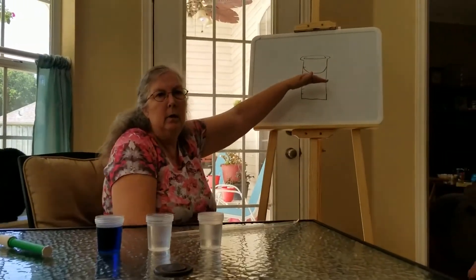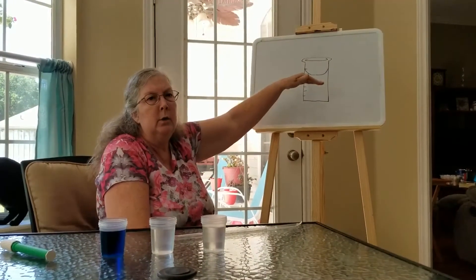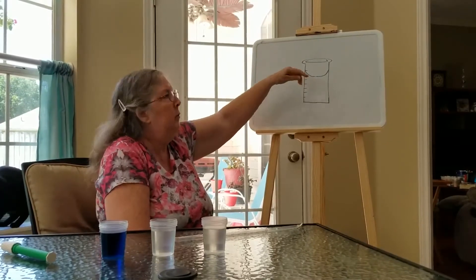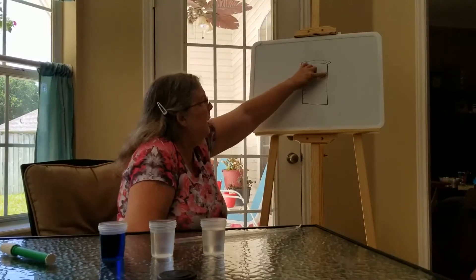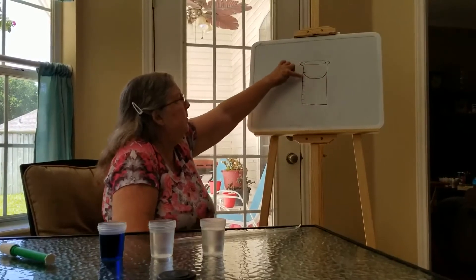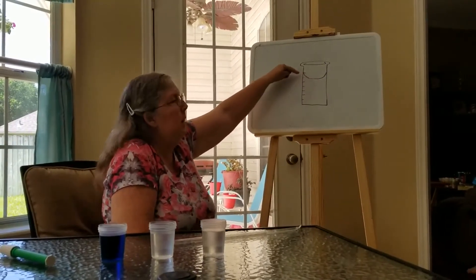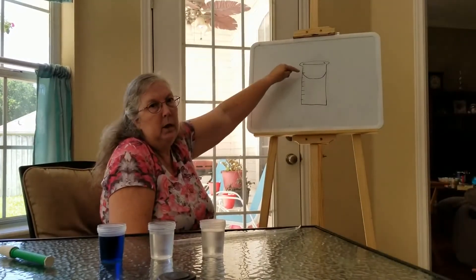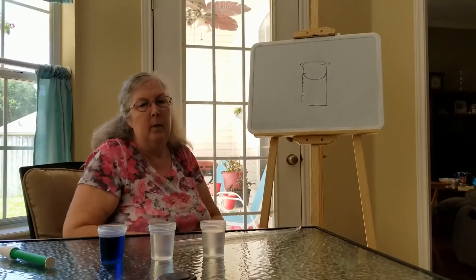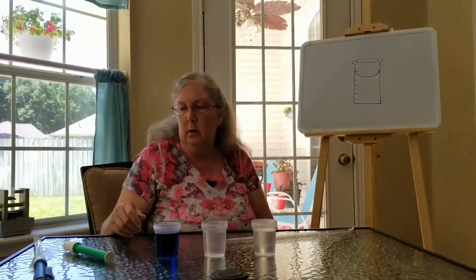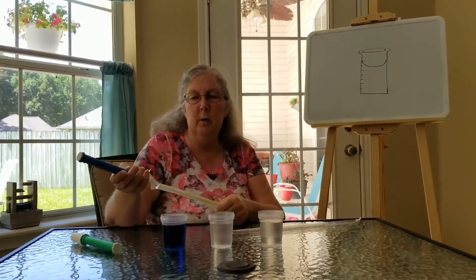When the fluid is not level, to get a proper reading you need to read from the bottom — it looks like a U-shape. We call this the meniscus, and you would take the measurement from the bottom, not from the top. If you take it from the top, you're going to have inaccurate readings.